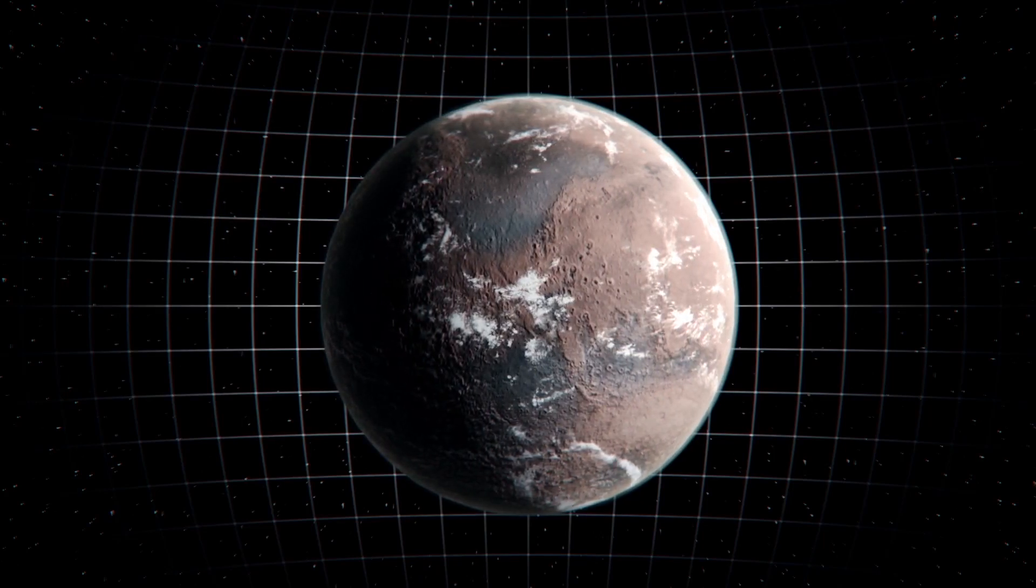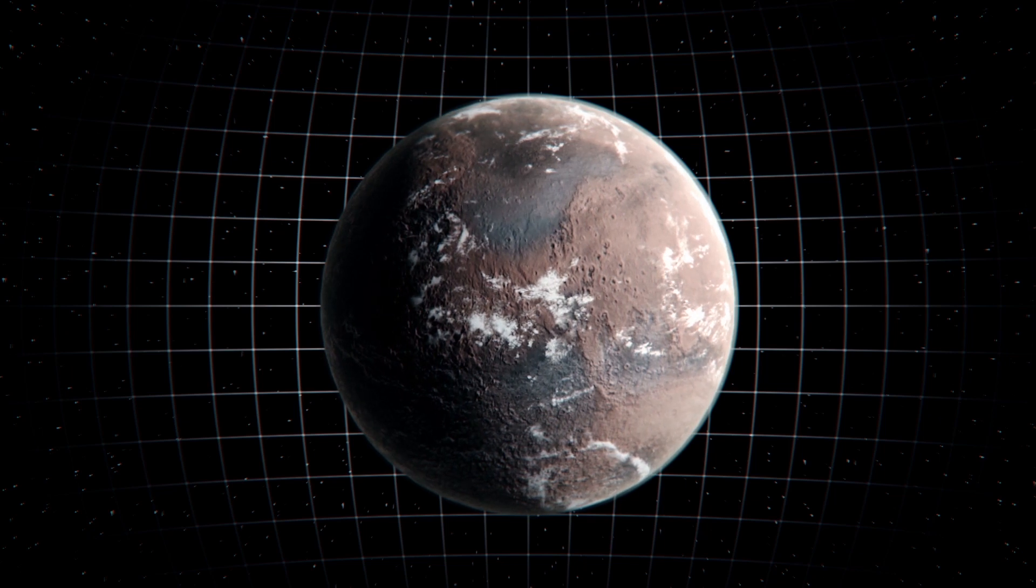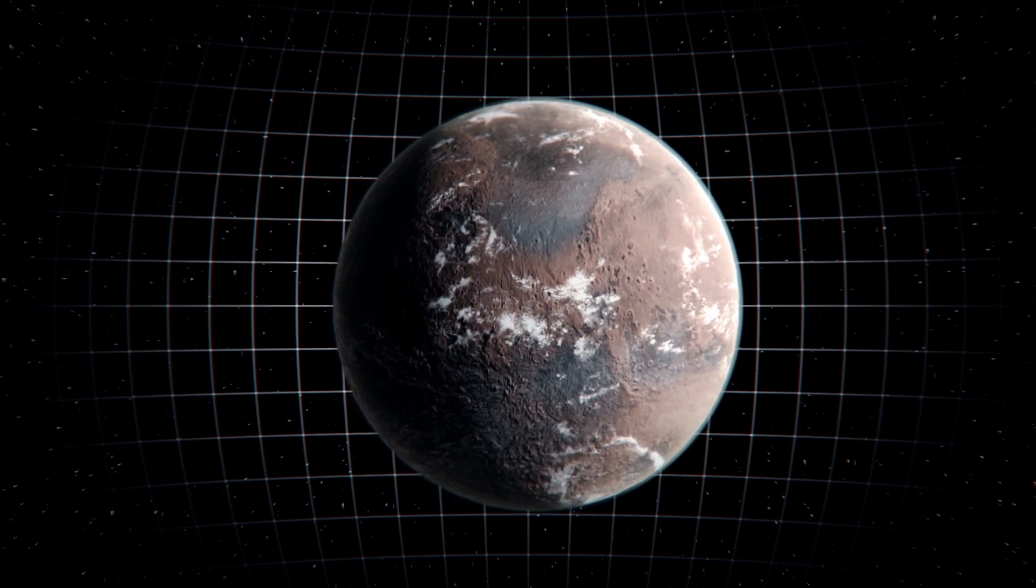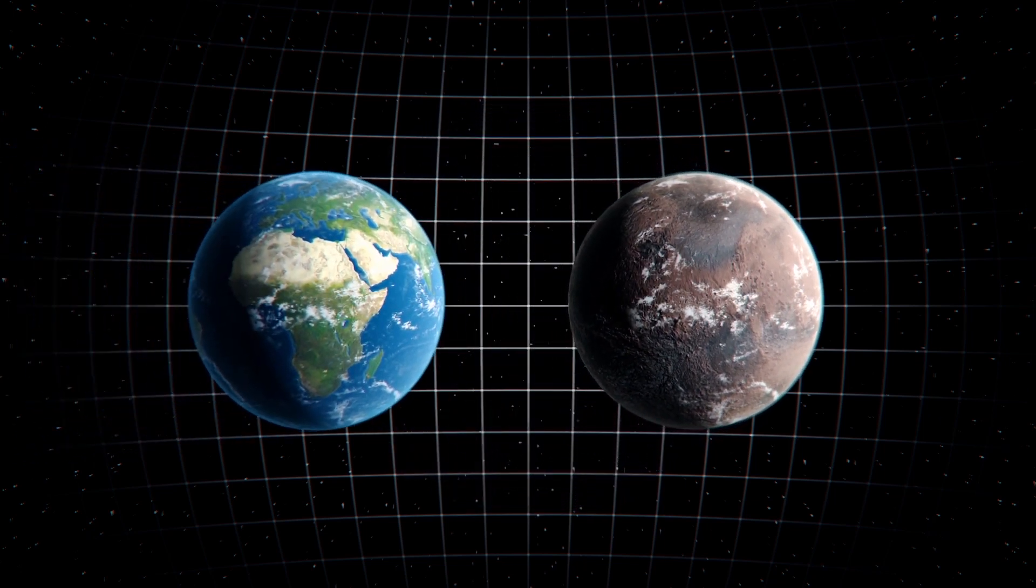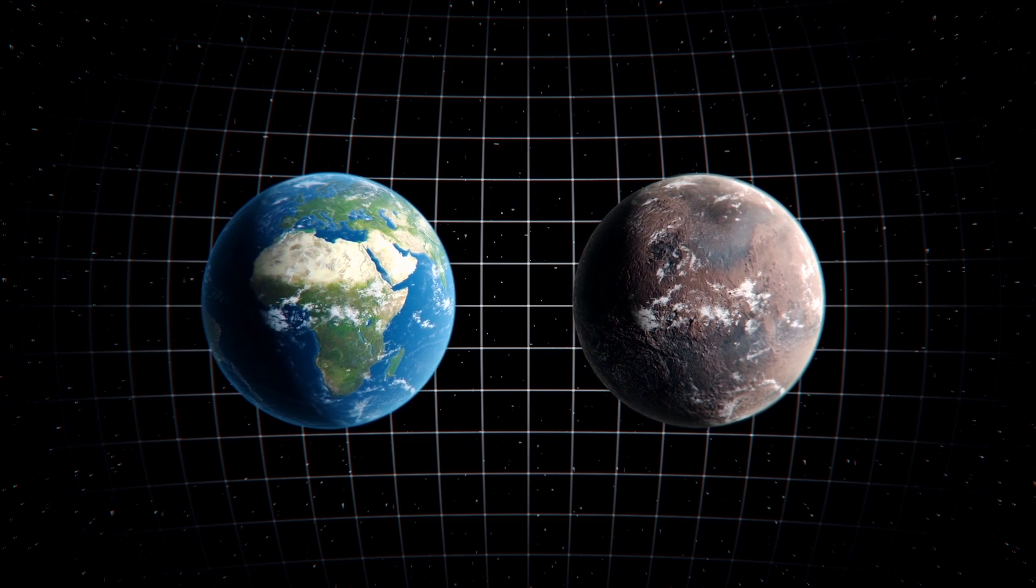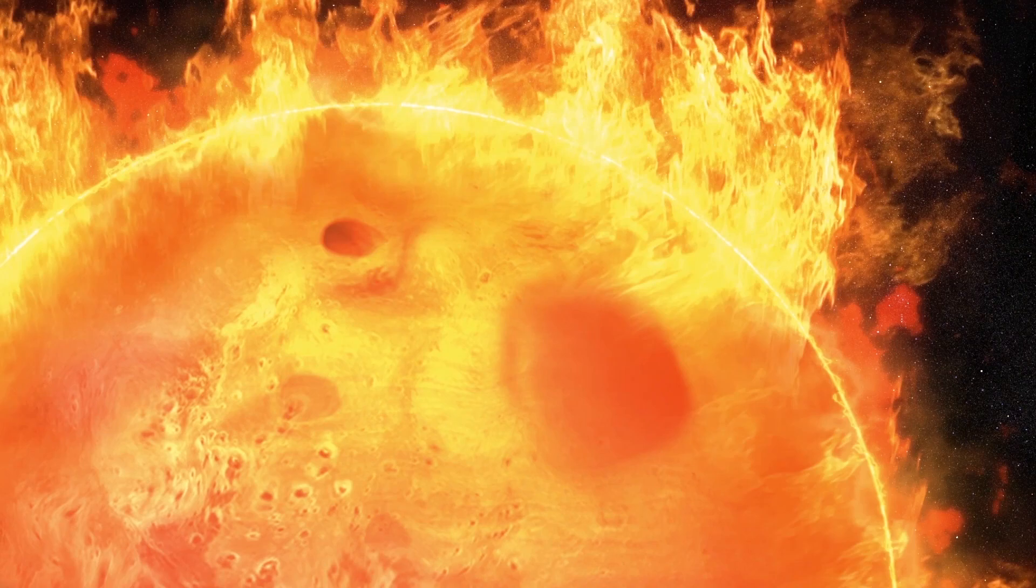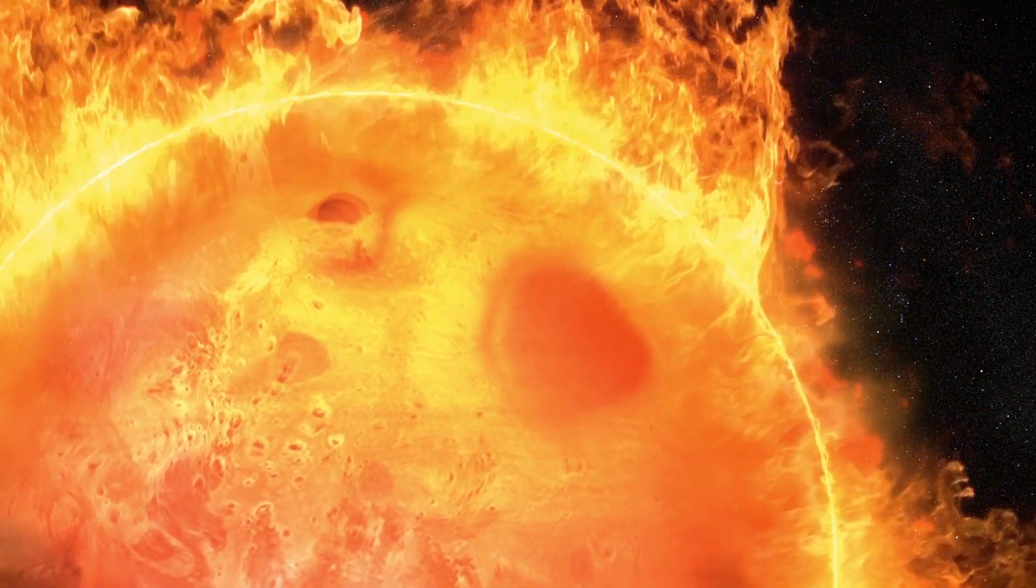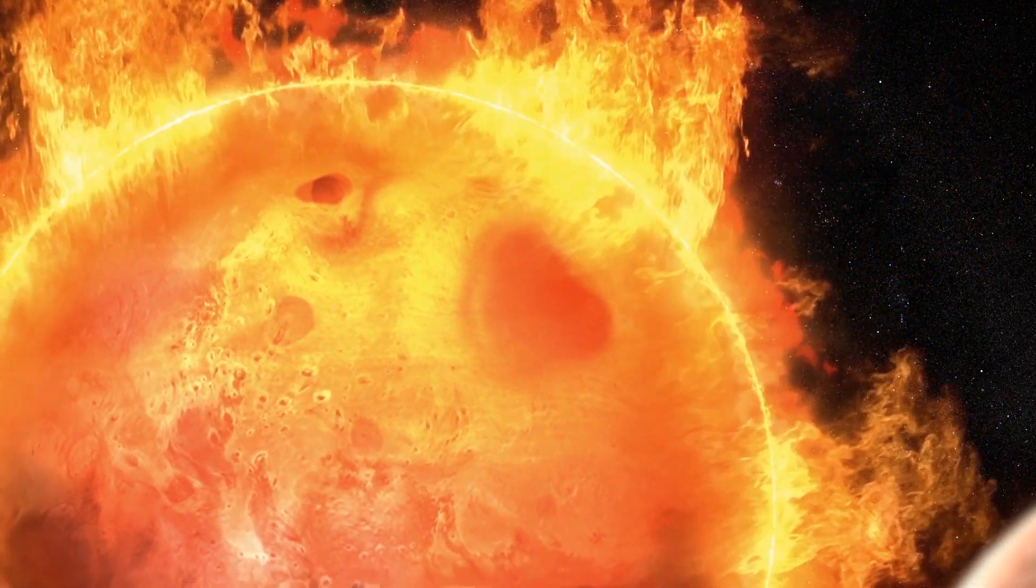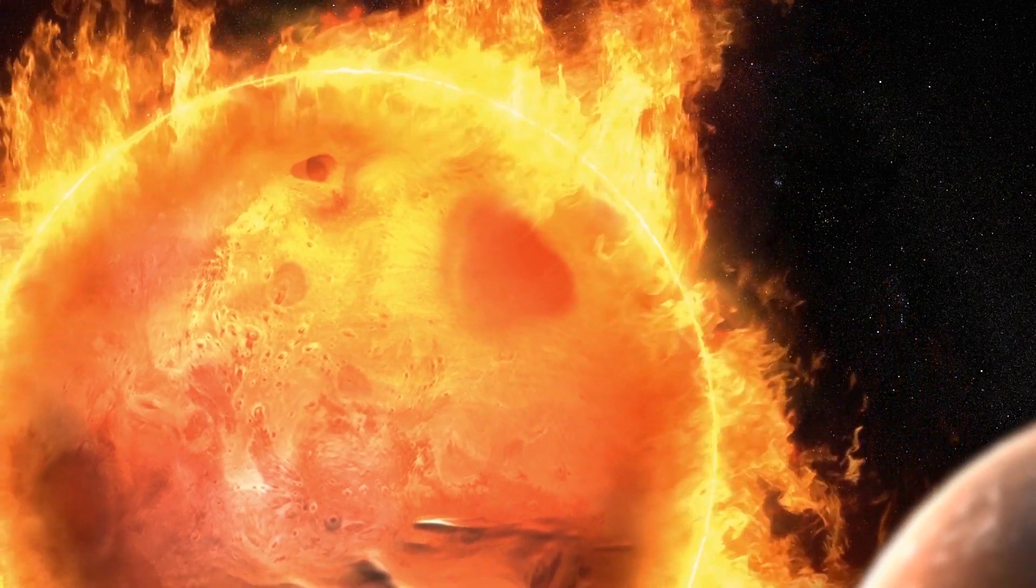Among all the exoplanets discovered by the Kepler spacecraft thus far, Kepler-1649c is most similar to Earth in size and estimated surface temperature. The planet is just 1.06 times the size of Earth, and it may share similar surface temperatures since it receives 75% of the amount of light Earth receives from the Sun.